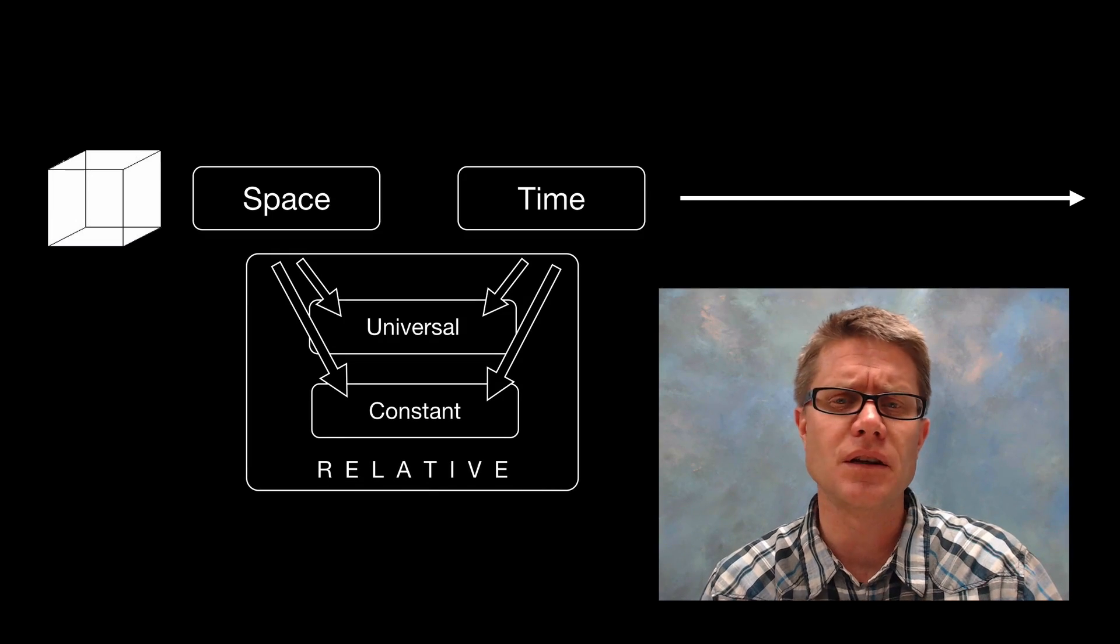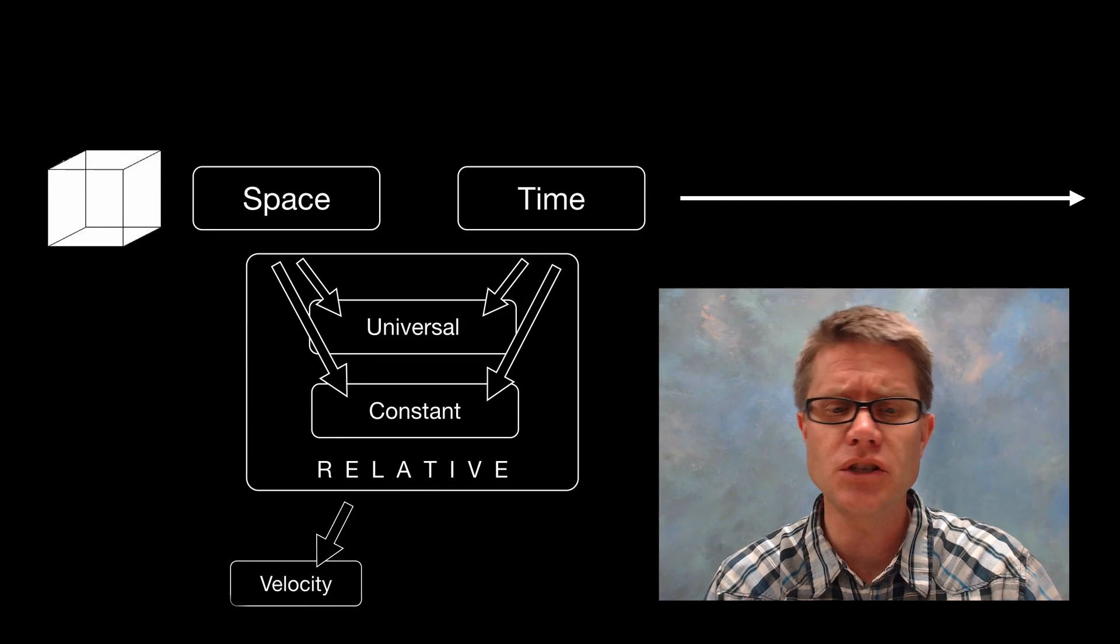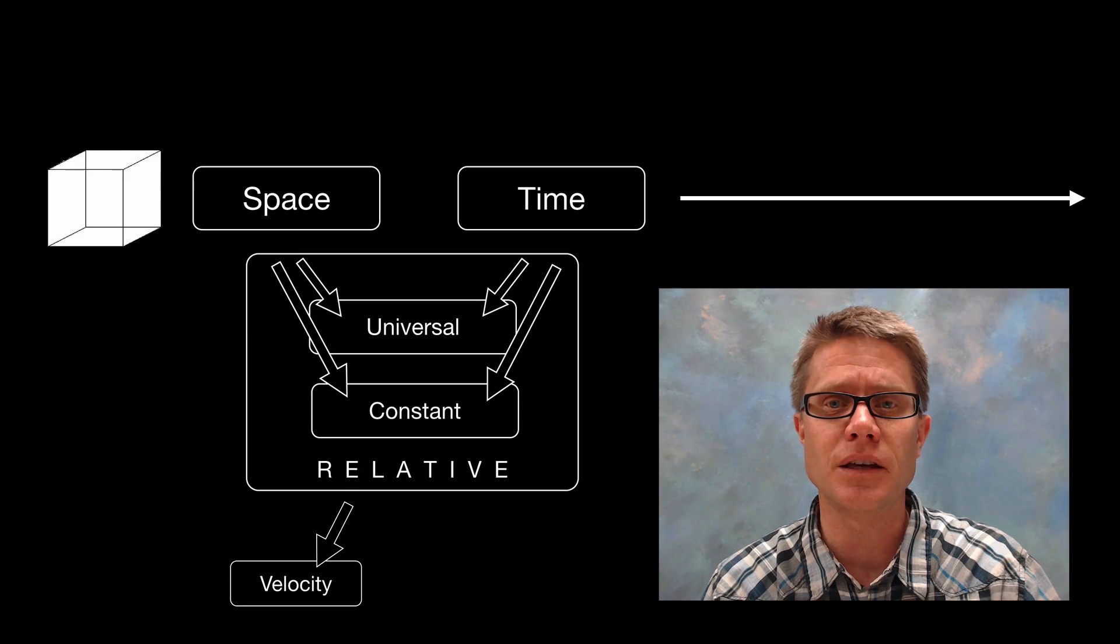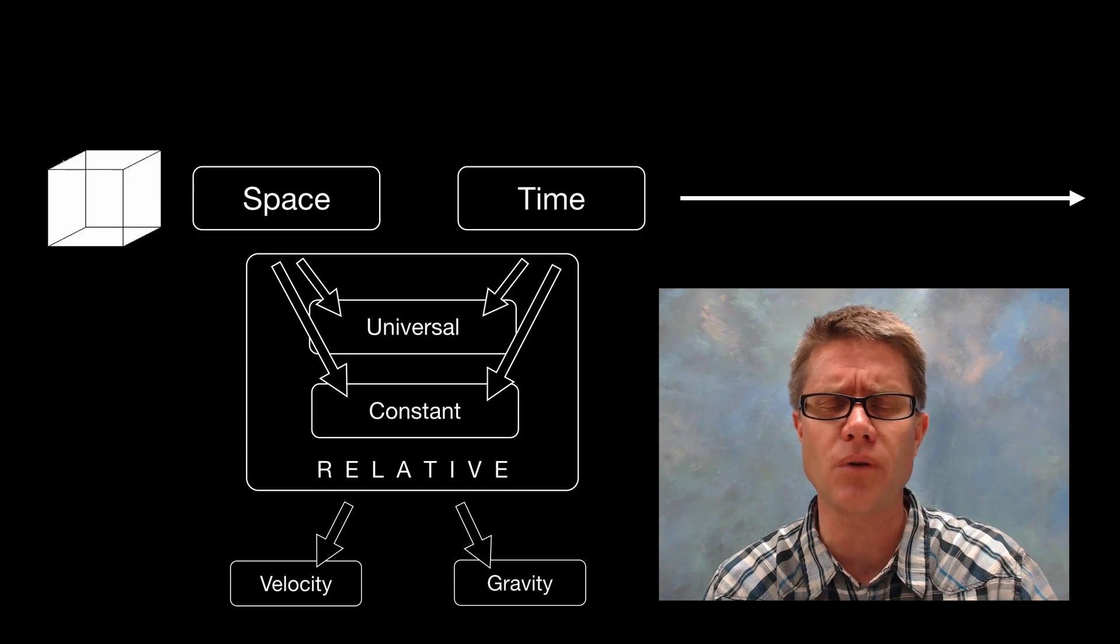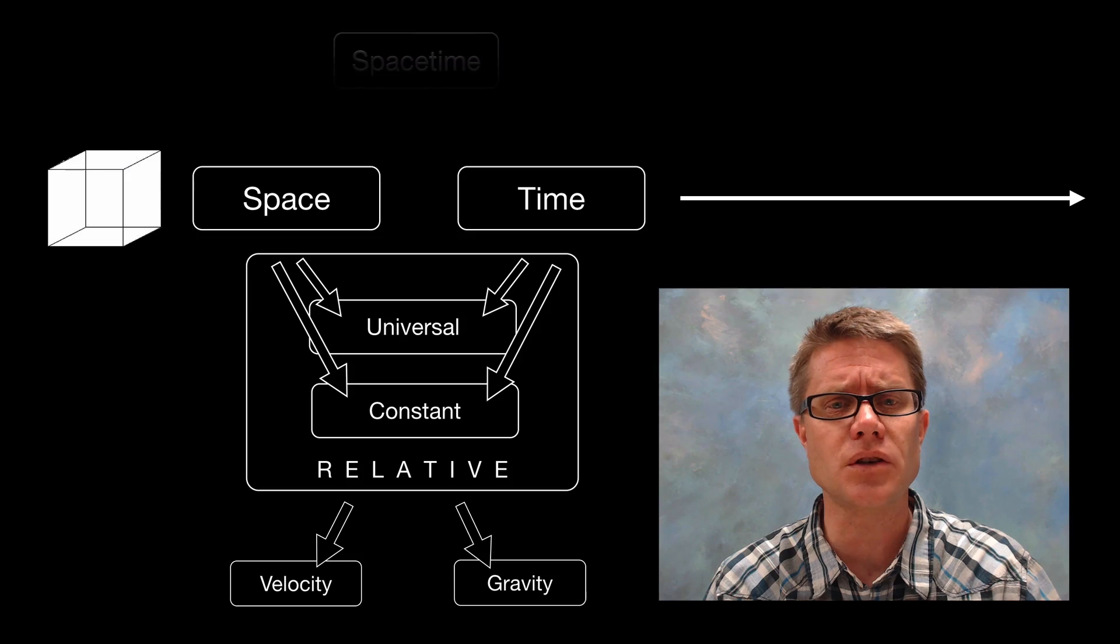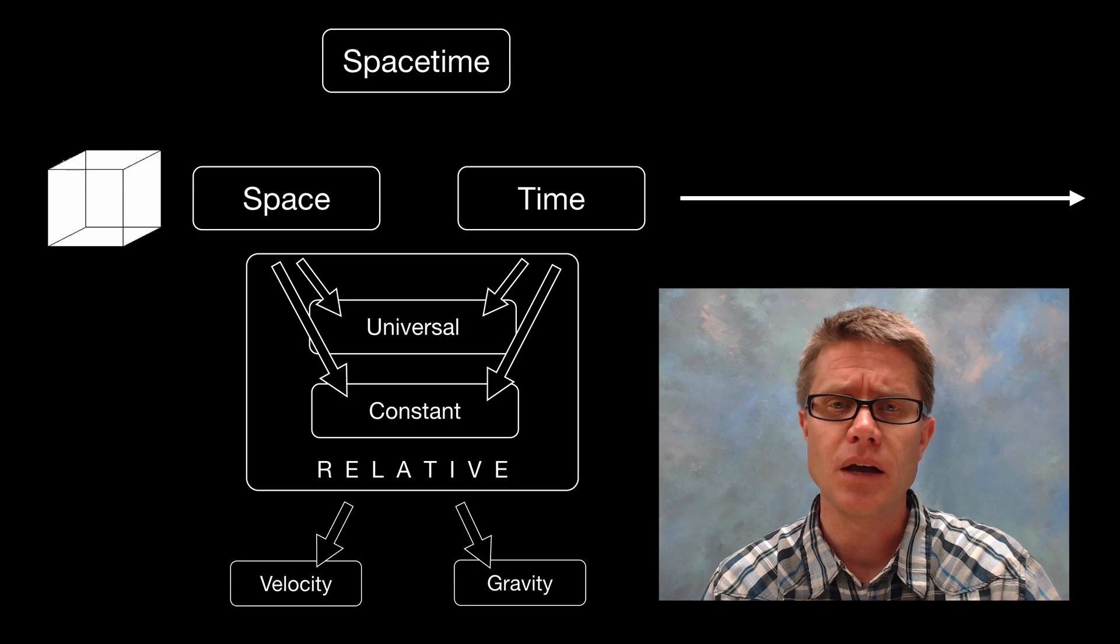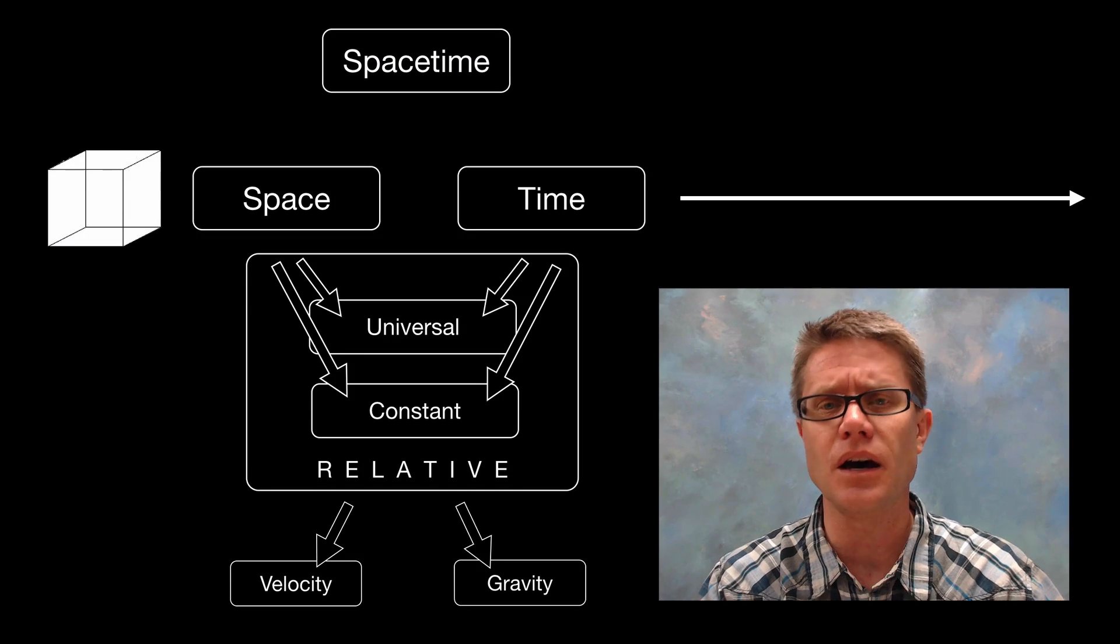But what Einstein found is that it's all relative. Changes in velocity can change space and time, and so can gravity. We've come up with this term called space-time.